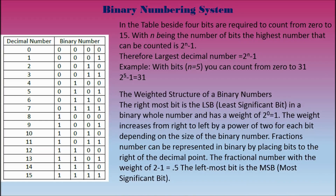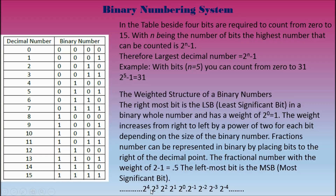The weighted structure of binary numbers: the rightmost bit is the least significant bit in a binary whole number, and it has a weight of 2 to the power of 0, which equals 1. The weight increases from right to left by a power of 2 for each bit, depending on the size of the binary number. Fractional numbers can be represented in binary by placing bits to the right of the decimal point. The fractional bit has a weight of 2 to the power of negative 1, which equals 0.5. The leftmost bit is the most significant bit. On our diagram, we have 2 to the power of 0, 1, 2, 3, and 4 to the left, and 2 to the negative 1, negative 2, negative 3, and negative 4 to the right of the decimal point.